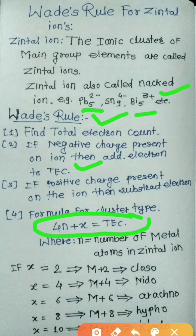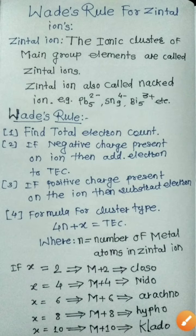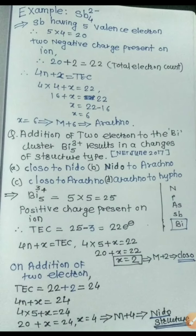In the formula 4n + x = total electron count, n is the number of metal atoms in the Zintl ion. If x = 2, it corresponds to the closo structure. If x = 4, it corresponds to the nido structure. If x = 6, it corresponds to the arachno structure. If x = 8, it corresponds to the hypho structure. If x = 10, it corresponds to the klado structure.